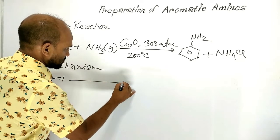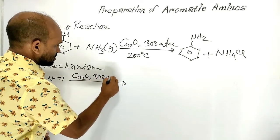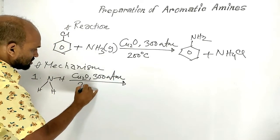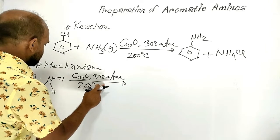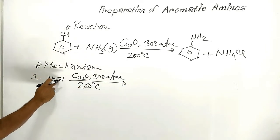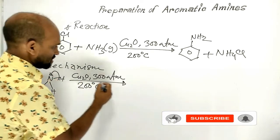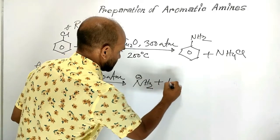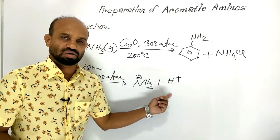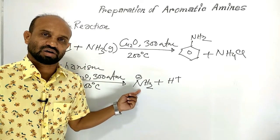At 300 atmosphere pressure and 200 degrees Celsius temperature, at this condition, nitrogen-hydrogen bond of ammonia experiences heterolytic fission and as a result this anion and hydrogen ion are formed. Its name is amide ion.